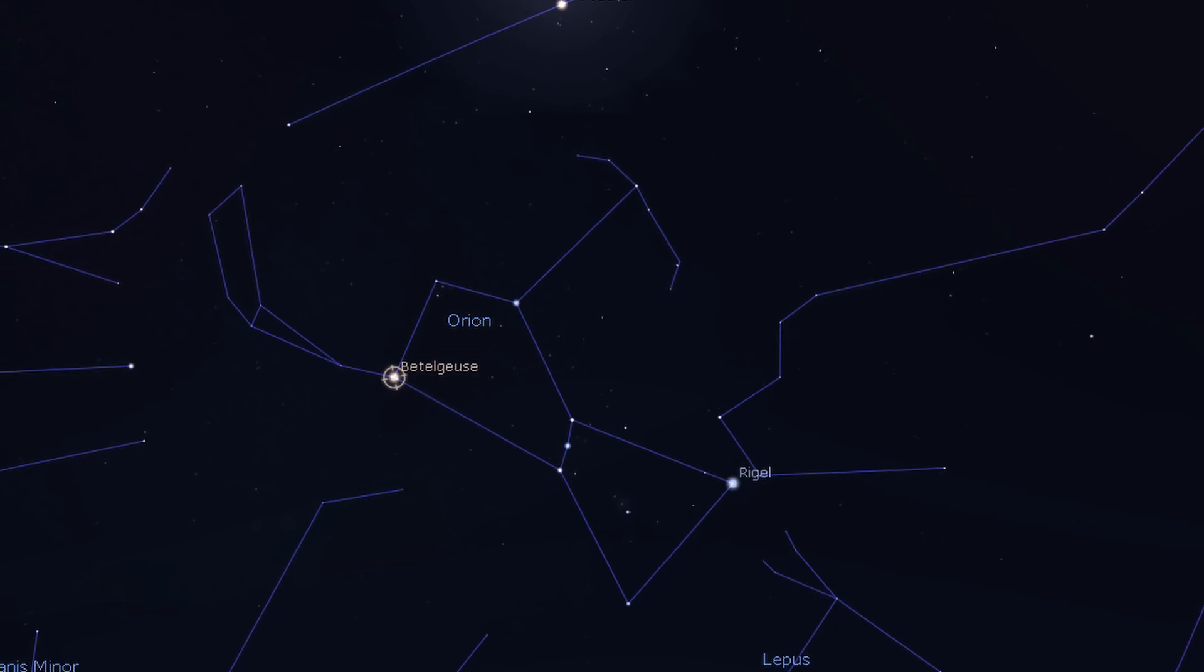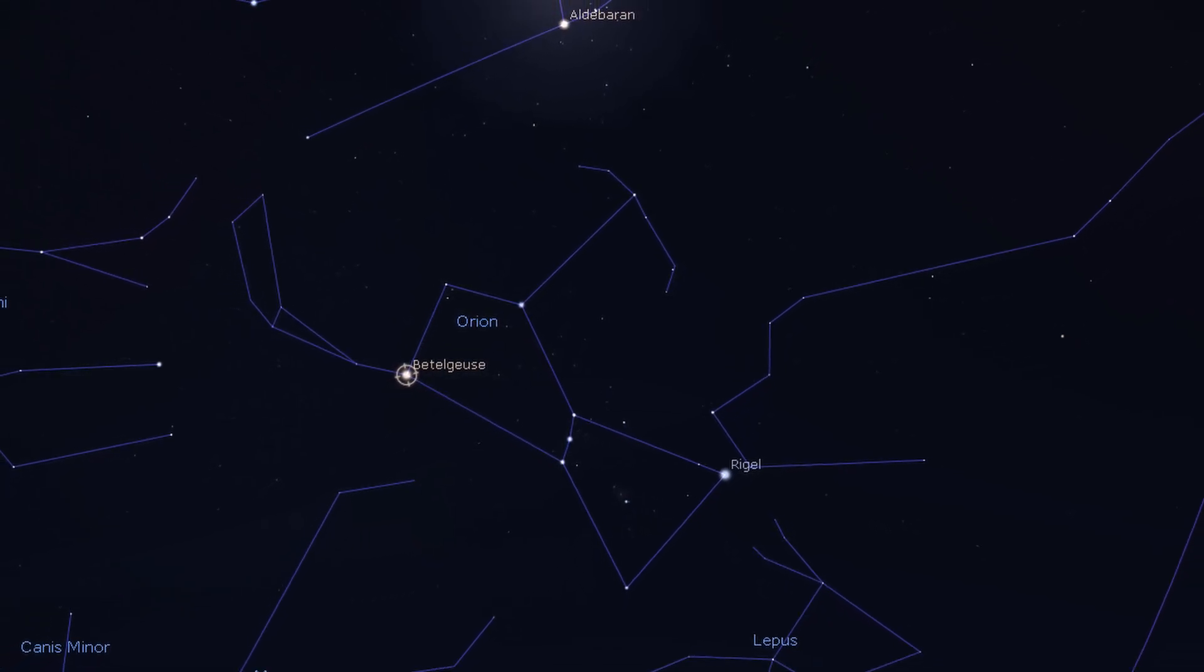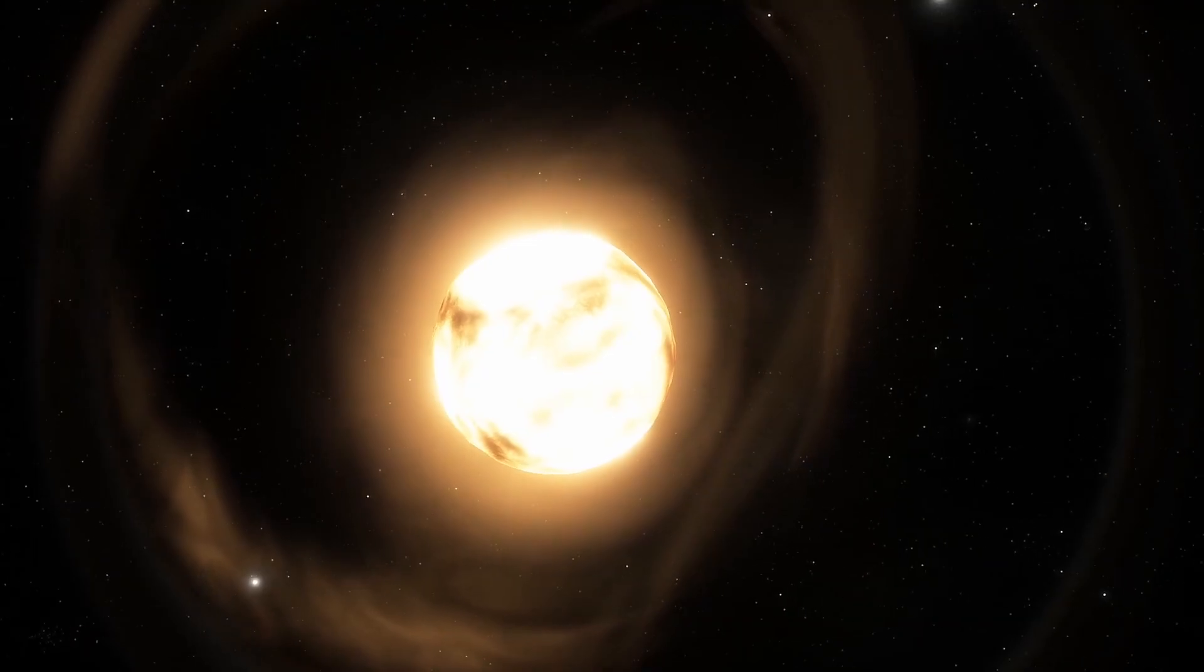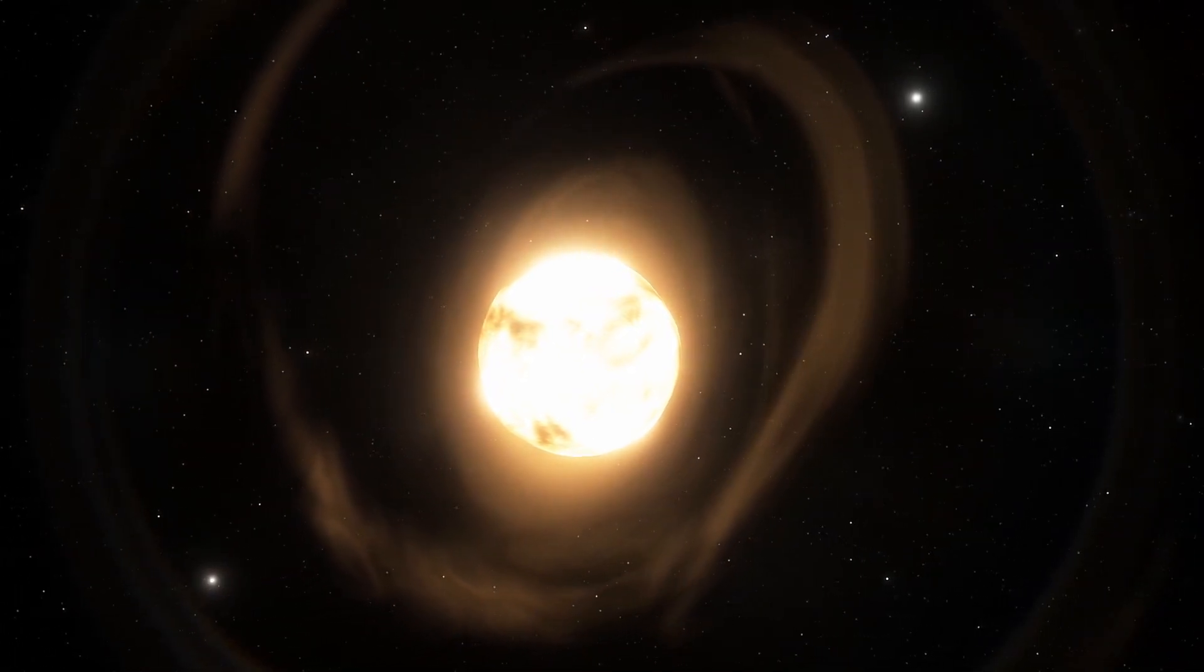It has a distinctive reddish glow and is known as a variable star. Its magnitude can vary from 0.0 to plus 1.3, and that is the widest range of any first magnitude star.